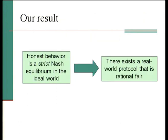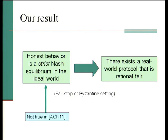Our result says that if honest behavior is a strict Nash equilibrium in the ideal world — strict meaning that if you deviate, you lose some utility — then we can show there exists a real-world protocol that is rational fair. This holds both in the fail-stop setting, where you can only deviate by aborting early, and in the Byzantine setting, where you can deviate arbitrarily. The impossibility result I mentioned before is in a setting where our precondition does not apply, so there's no contradiction.